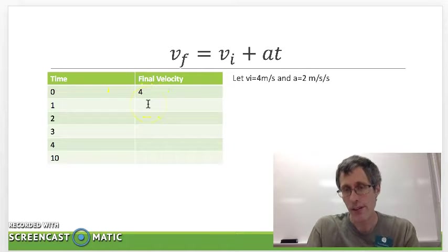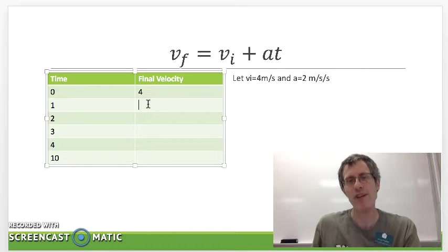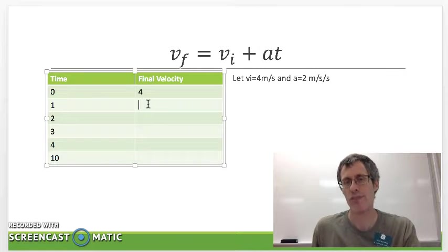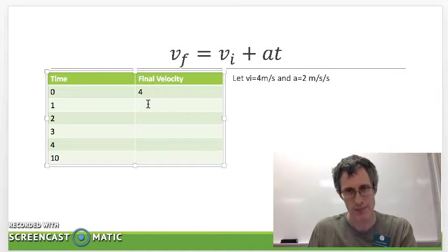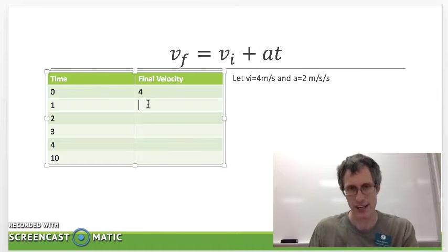Now the acceleration is 2 meters per second squared and that means that every second its speed will increase by 2 meters per second. So you add 2 to the velocity for every second.